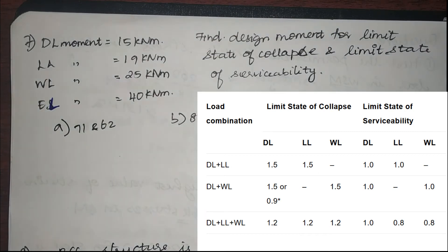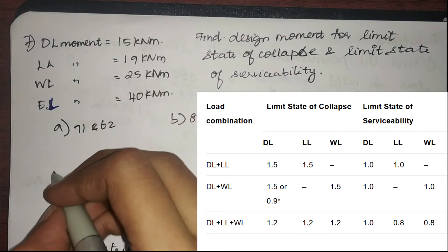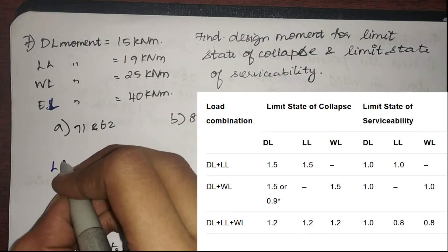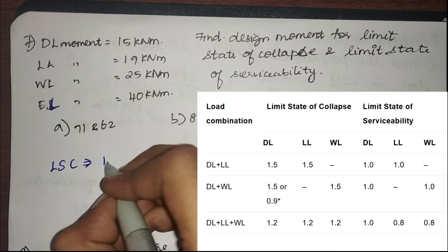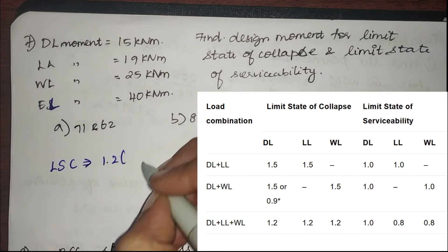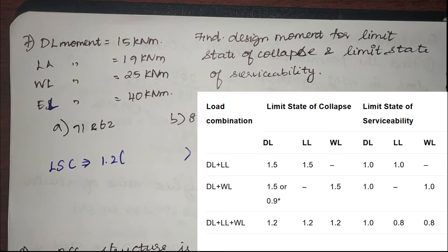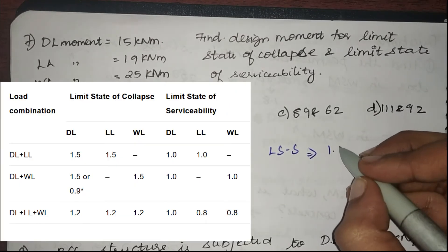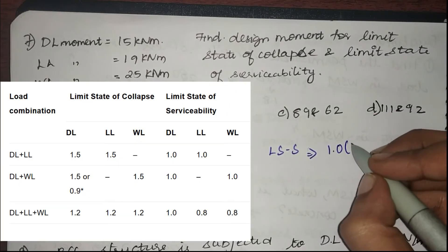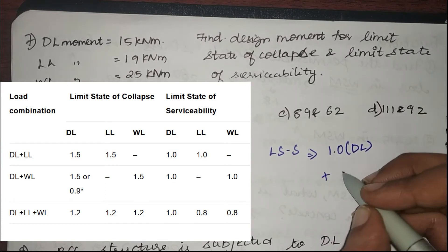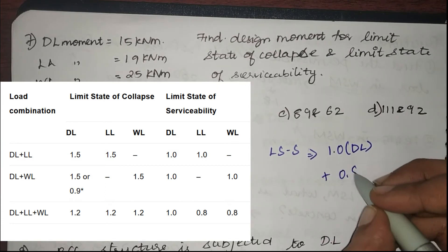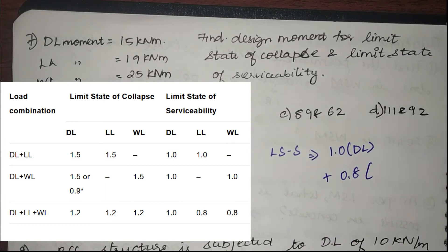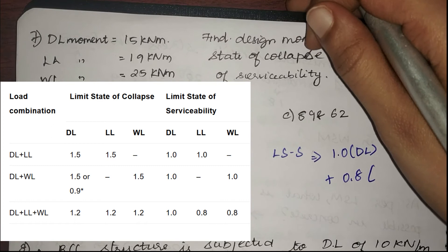For limit state of collapse, the factor is 1.2 multiplied into all three loads. For limit state of serviceability, it is 1.0 times dead load plus 0.8 times the other two loads.